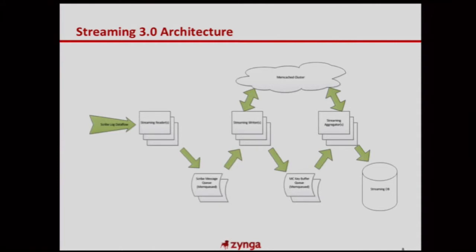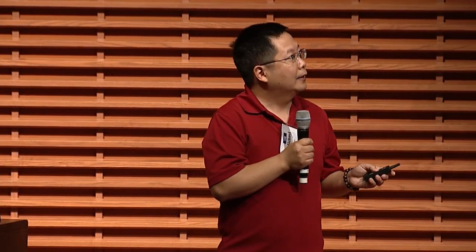For the streaming reader, the main challenge is throughput — if we can handle one million messages per second, how do we scale to five million? For the streaming writer, the challenge is throughput of the in-memory cache cluster, handling millions of calculations per second — minimum, maximum, count, average — for every time window. For the aggregator, the challenge is writing that huge volume of data to transactional MySQL cluster storage in a timely fashion.